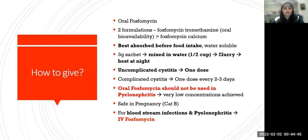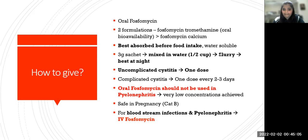Fosfomycin is best absorbed before food intake and is water soluble. It is available in sachet format — the sachet has to be mixed in half a cup of water to make a slurry, and it is best taken at night to allow sufficient drug concentration to act on the organism. The treatment dose for uncomplicated cystitis is just one dose. In complicated cystitis, you can give one dose every two to three days until the urine is sterile.